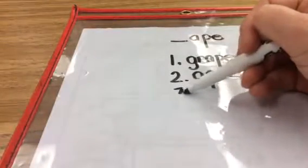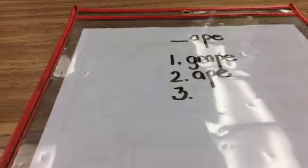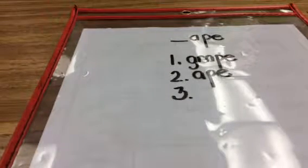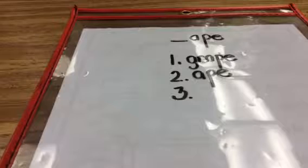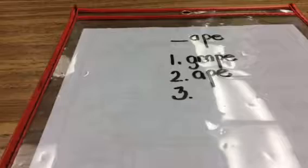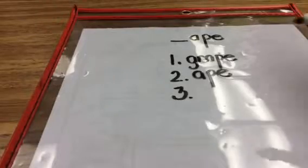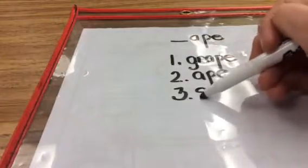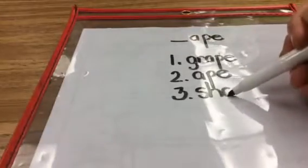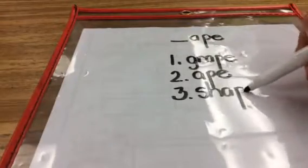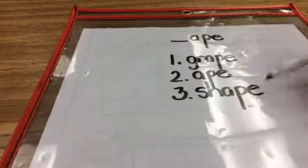For number 3, let's spell the word shape. Ape. A rectangle is a 2D shape.